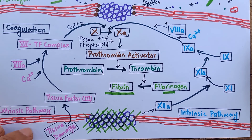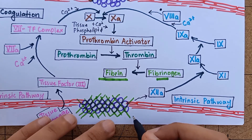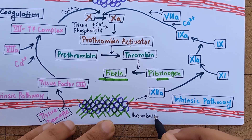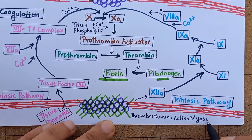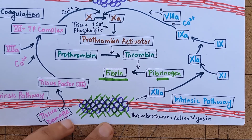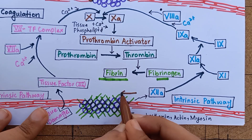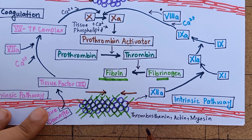After all the subsequent steps of clotting and final clot formation, the entrapped platelets contribute to clot retraction by activating thrombosthenin, actin, and myosin molecules. These contractile proteins cause strong contraction and the edges of the broken blood vessel are pulled together, contributing further to hemostasis.